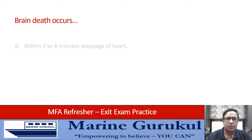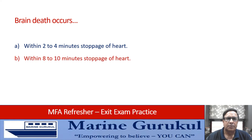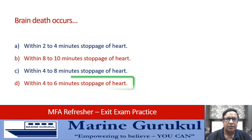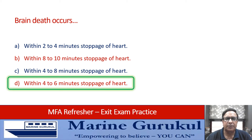Brain death occurs within: two to four minutes of heart stoppage, eight to ten minutes of heart stoppage, four to eight minutes of heart stoppage, or four to six minutes of heart stoppage? The correct answer is D — brain death occurs within four to six minutes of stoppage of the heart.